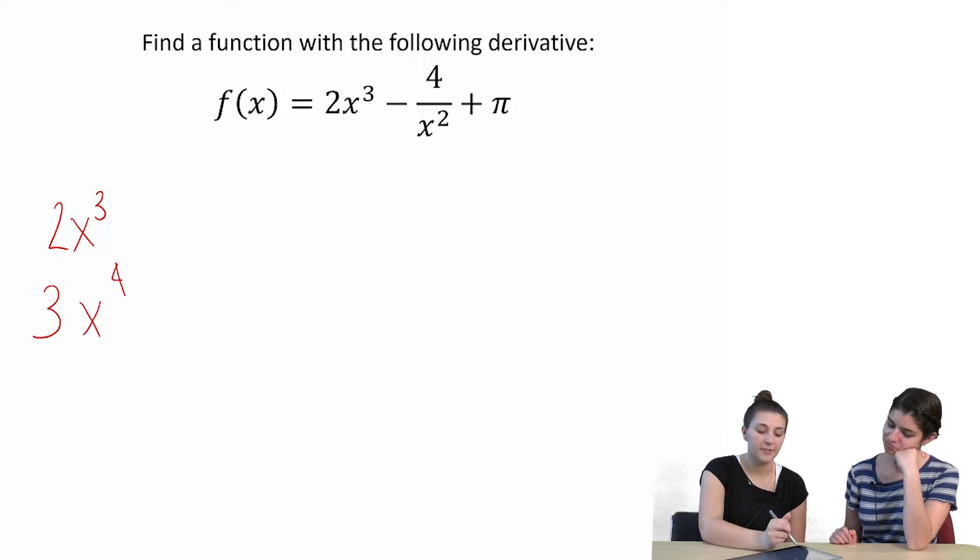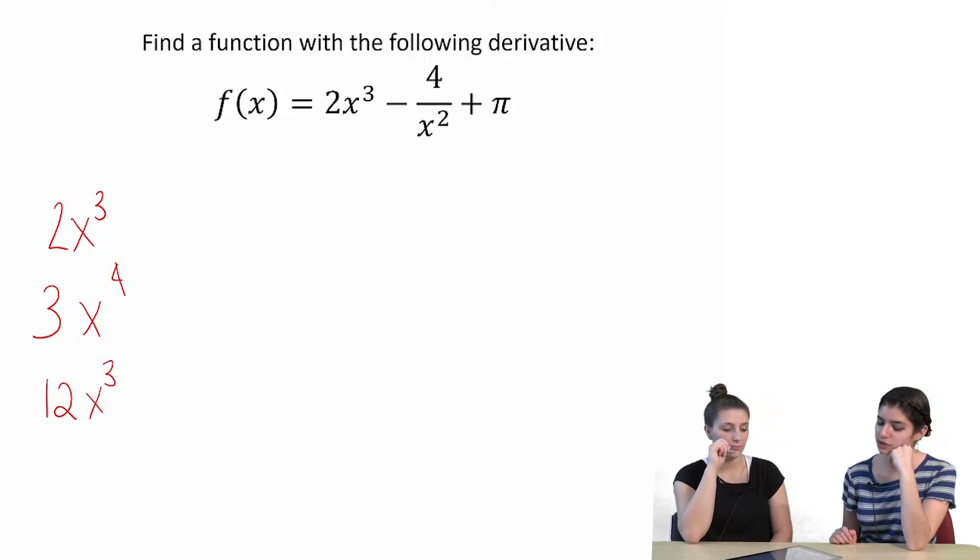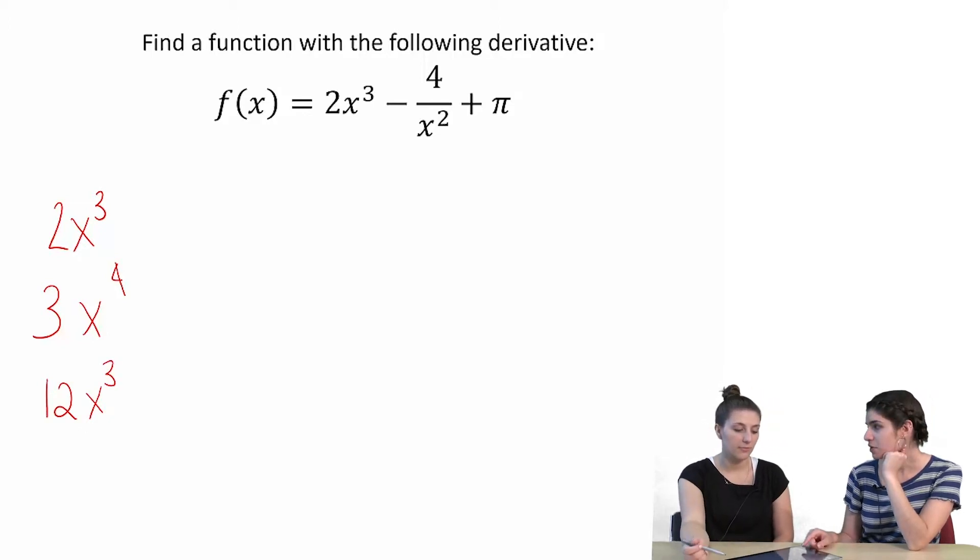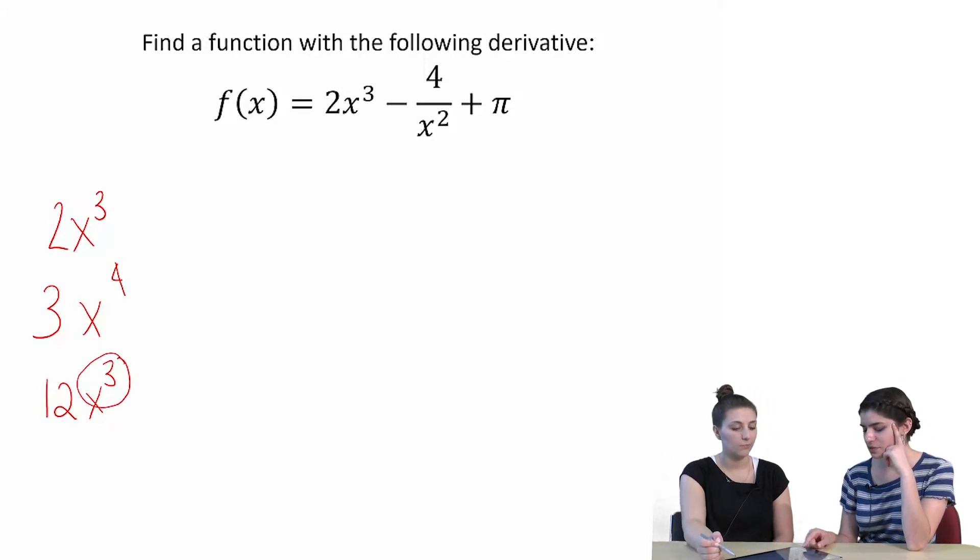Sure. Well, when we take the derivative of that, we get 12x to the third, so that's not working. No, but you didn't get the, you got the exponent that you wanted. That's true. So you did want that exponent, we just don't want that coefficient.